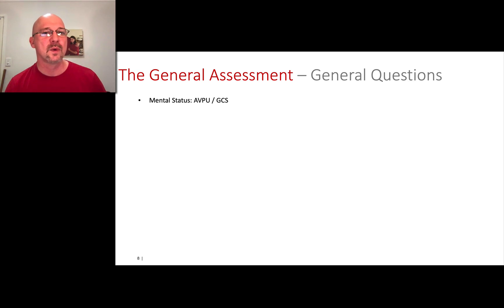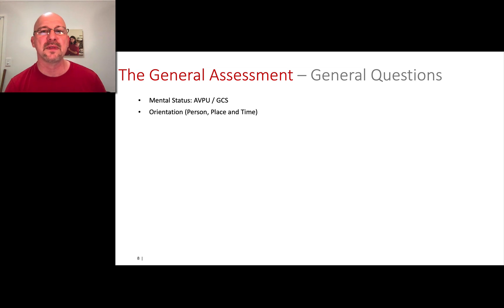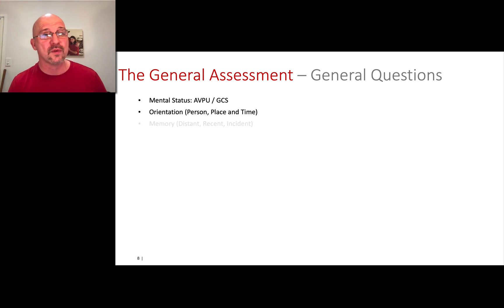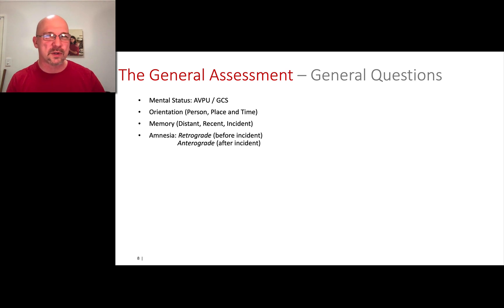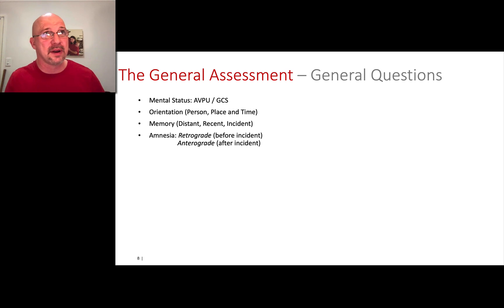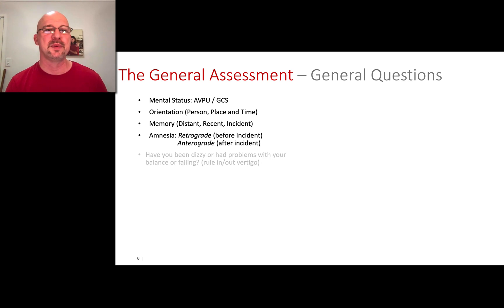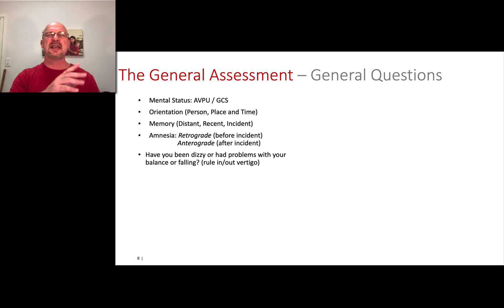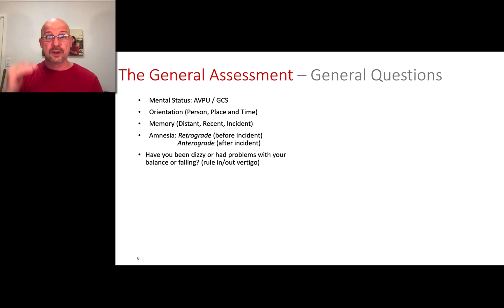Let's talk about some questions we can ask. We start with mental status — find out if they're alert, verbal, responsive to pain. Get a Glasgow Coma Scale score. Ask about orientation to person, place, and time. Ask about memory — distant, recent, and incident. Find out if there are any amnesic gaps: is there any part of today or the incident they can't remember? Have they been dizzy? We're going to try to rule in and rule out vertigo — that subjective sense that either the room is spinning or, less commonly, a vertical sense of things getting taller and shorter.